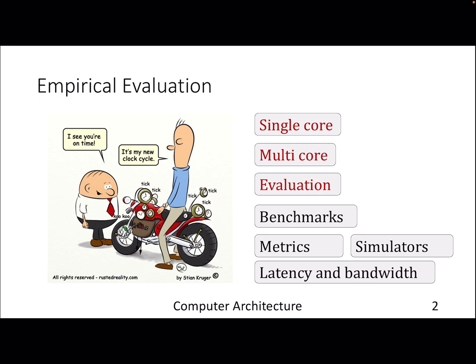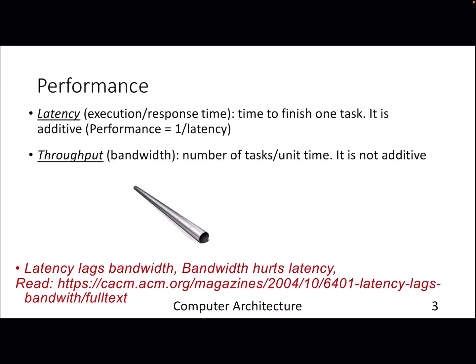Performance is called latency and bandwidth. Latency is nothing but the time it takes to finish one task. It can be termed as response time—you start something at time t, you finish at t plus delta, so delta is your latency. On the other hand, bandwidth is the number of tasks per unit time. It's the throughput that gives you the notion of what you can do at a given point of time.